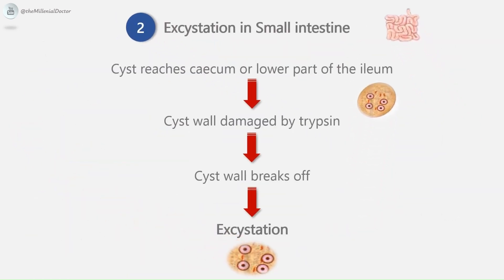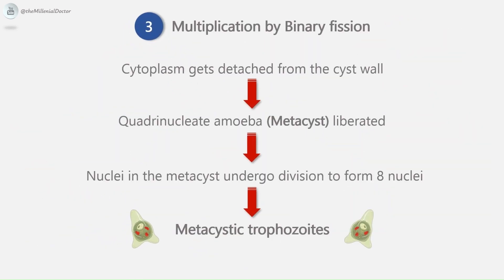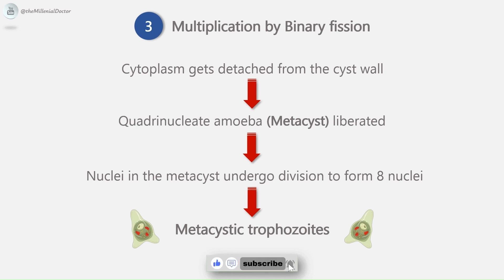In the second stage, excystation occurs in the small intestine. When the cyst reaches the cecum or lower ileum, the alkaline medium allows trypsin to damage the cyst wall, breaking it — a process called excystation. The cytoplasm detaches from the cyst wall, amoeboid movements cause a tear, and the quadrinucleate amoeba is liberated — called the metacyst. The nuclei immediately undergo division to form eight nuclei, each surrounded by cytoplasm to become eight small metacystic trophozoites.